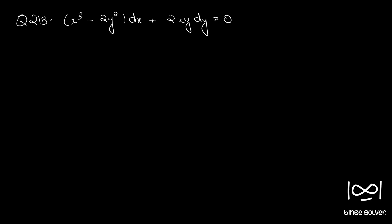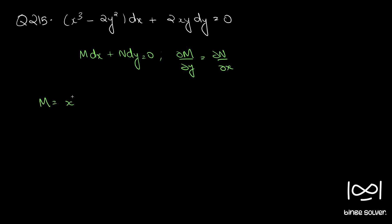Question number 215. The differential equation is x³ minus 2y² dx plus 2xy dy equal to 0. The given differential equation is in the form M dx plus N dy equal to 0. We will first check whether the differential equation is exact using the necessary and sufficient condition ∂M/∂y equal to ∂N/∂x. Here M is x³ minus 2y² and N is 2xy.